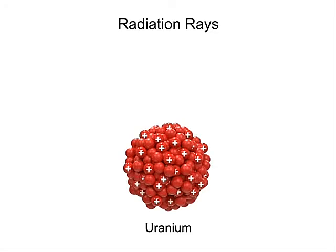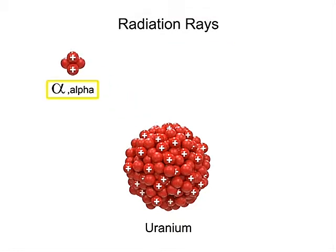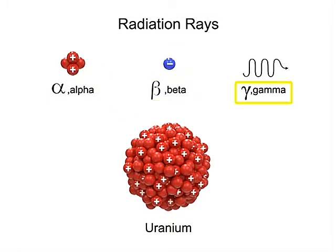The nucleus of radioactive material emits three different types of radiation rays, called alpha, beta, and gamma. Due to the distinct electrical charge characteristics of the alpha, beta, and gamma rays, they can be separated by directing a beam from a radioactive source through a magnetic field.